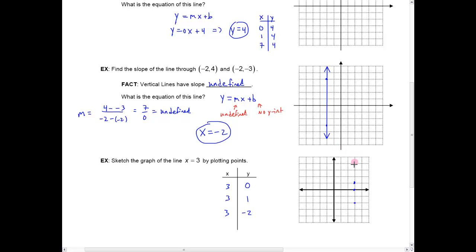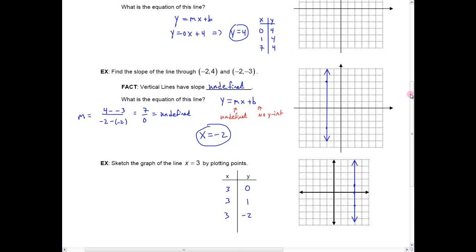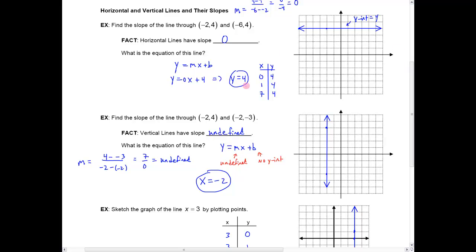So, it's fairly easy to write the equation of a horizontal or a vertical line. If it's a vertical line that goes through x equals 3, it's just x equals 3. If it's a horizontal line that goes through y equals 4, then it's just y equals 4.